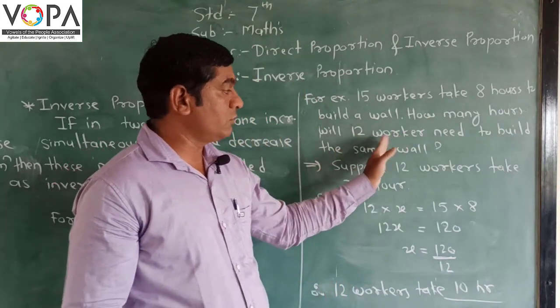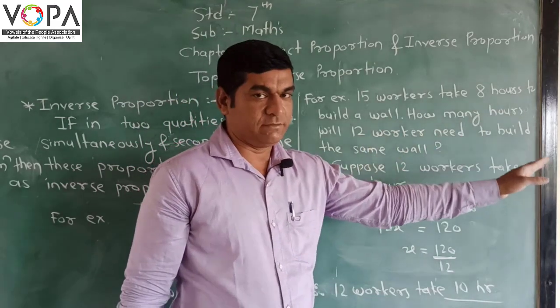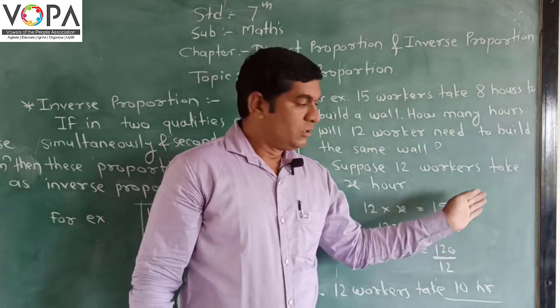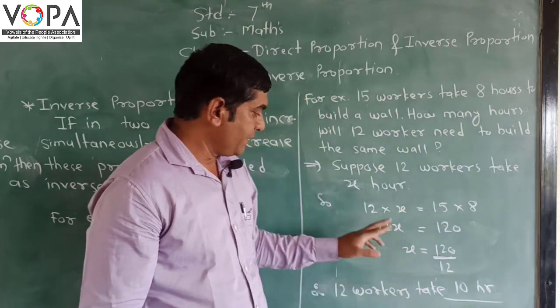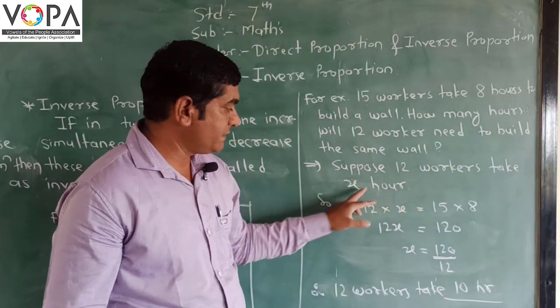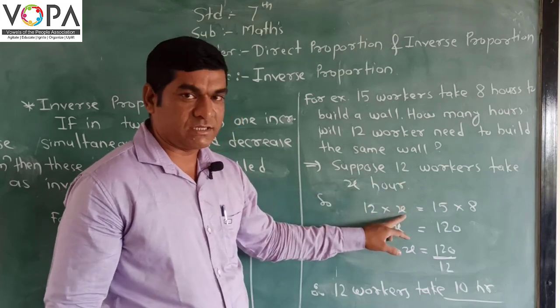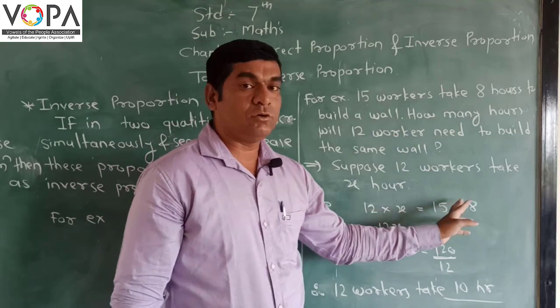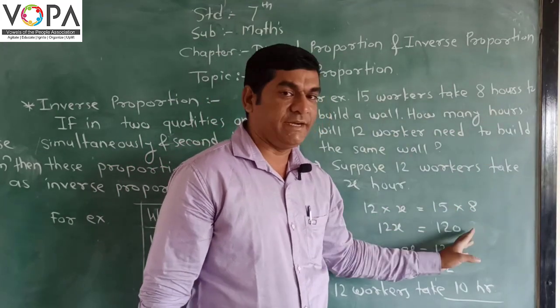Suppose 12 workers take x hours. The arrangement for this question: 12 × x means the time taken by 12 workers. So 12 × x = 15 × 8.